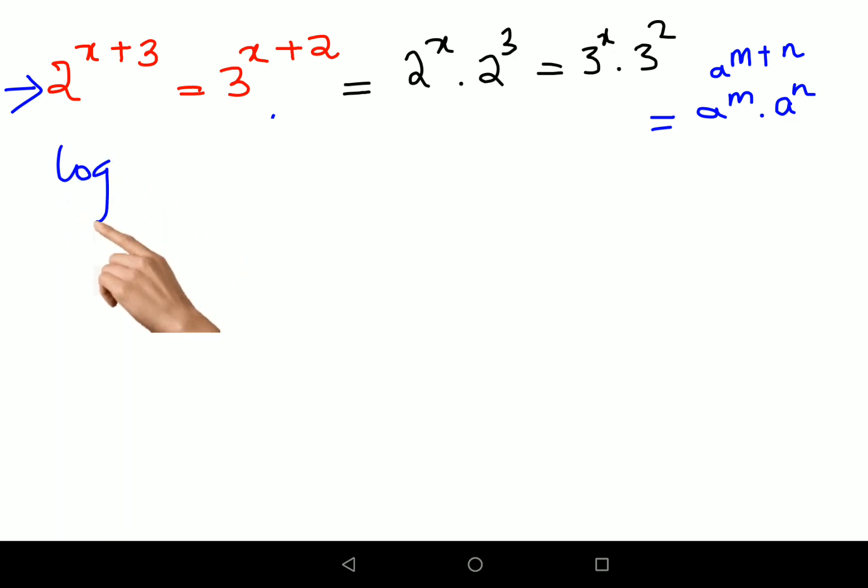What happens in that case is that when you take log on both the sides, let's apply log. So log of 2 raised to x plus 3 equals log of 3 raised to x plus 2.